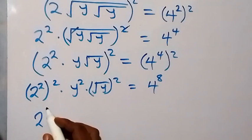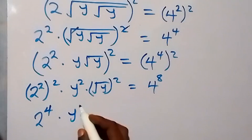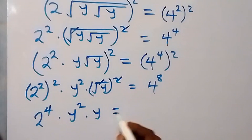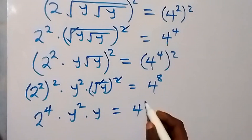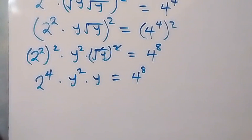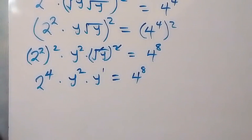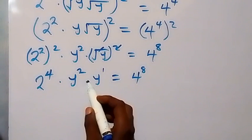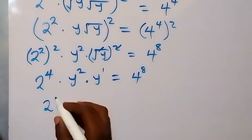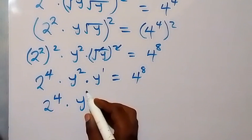The squared cancels the square root, then times y equals to 4 raised to power 8. Then in the next step, this is y raised to power 1, so when we apply the law of indices here, this will be 2 raised to power 4, now multiplied by — this has become y raised to power 3.